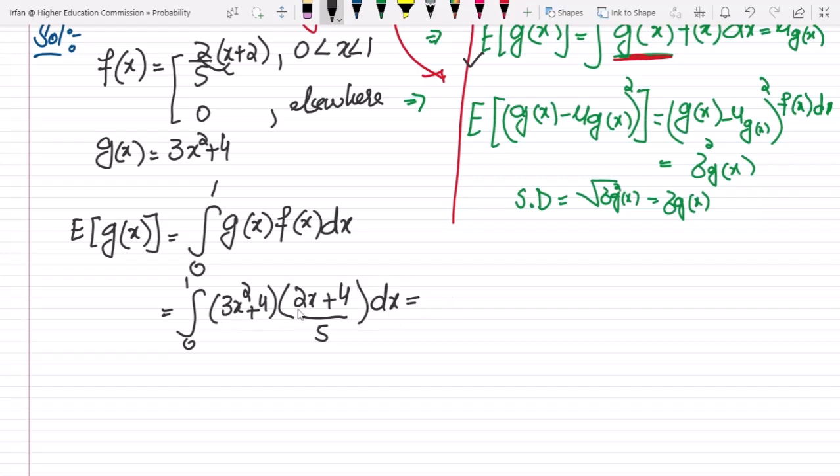Multiplying them and taking 1 by 5 outside, this would be 0 to 1 of 6x cube plus 12x square plus 8x plus 16 dx.